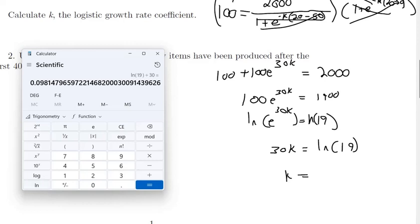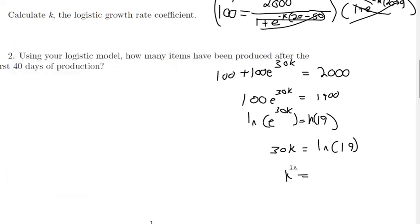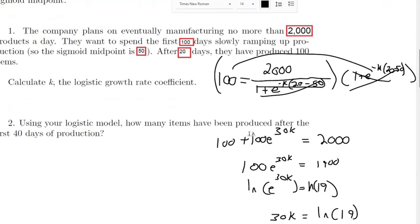There's our k, 0.0981. E is the exponential constant. There's k, 0.0981. So that's what we've got to do for part one.